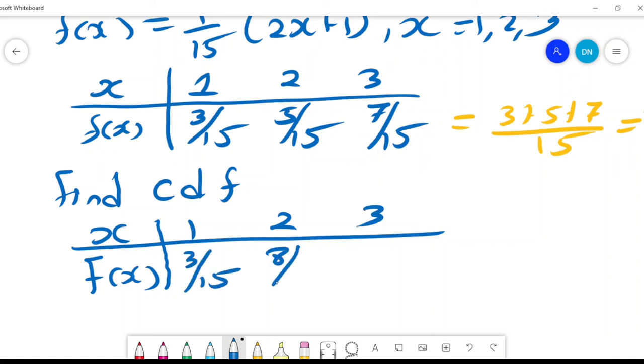The second one is 8 over 15. What is 8 over 15? 3 over 15 plus 5 over 15 is 8 over 15, and then 8 plus 7, that is 15 over 15, which equals 1. Telling us that our last value should equal 1.